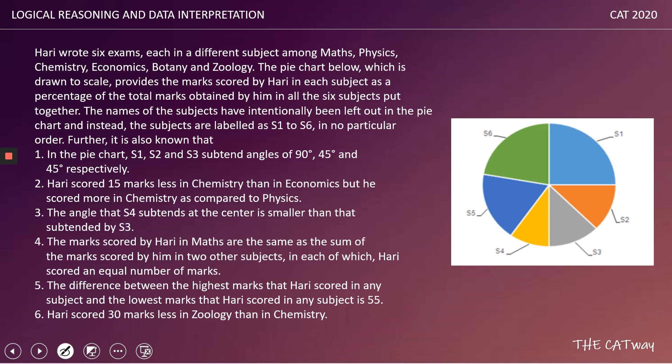From the pie chart, S1 subtends 90°, S2 and S3 each subtend 45°. Harri scored 15 marks less in chemistry than in economics, so economics > chemistry. He scored more in chemistry than in physics, so chemistry > physics. The angle subtended by S4 is smaller than that subtended by S3, so S4 is the smallest sector.